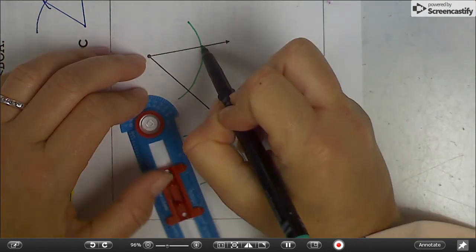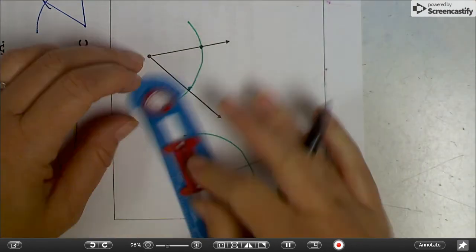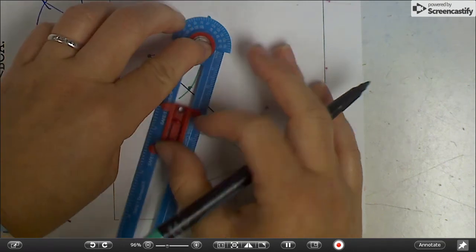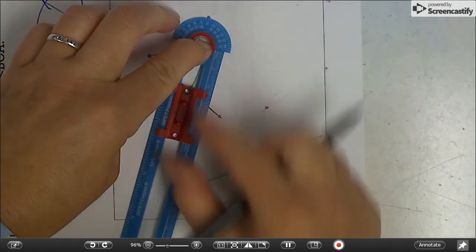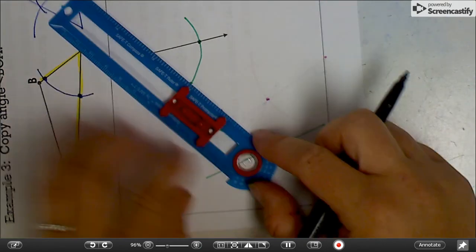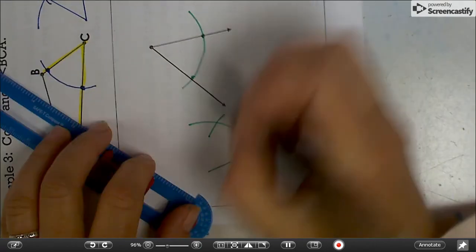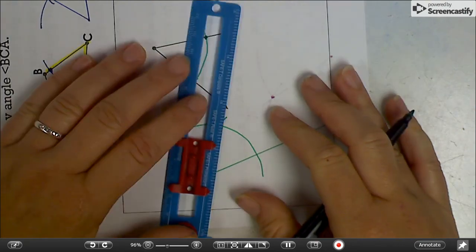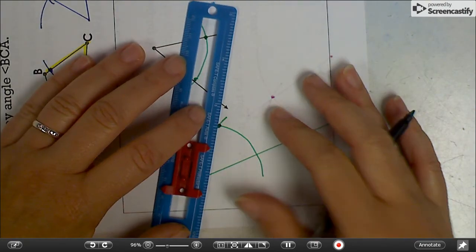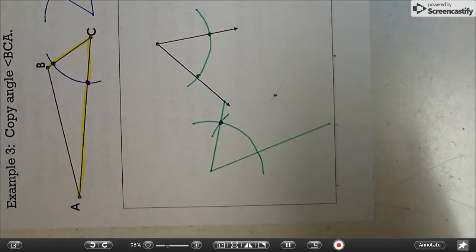I need to measure the original angle opening. And then I need to recreate that down here on the new one. So spinner on the point. Intersect. There's our point to connect to. And it's done.